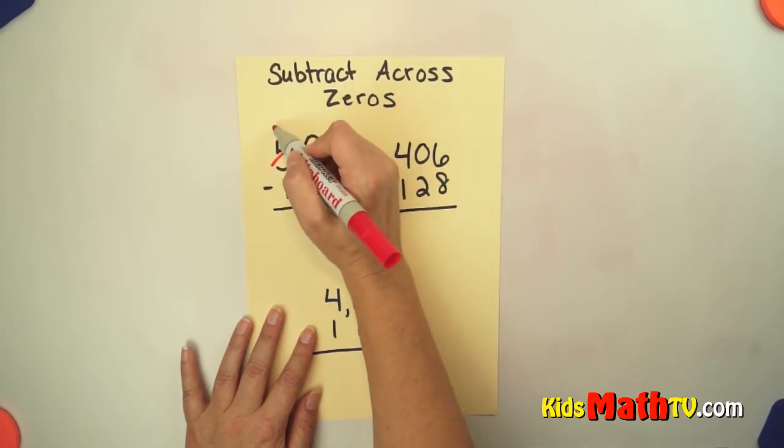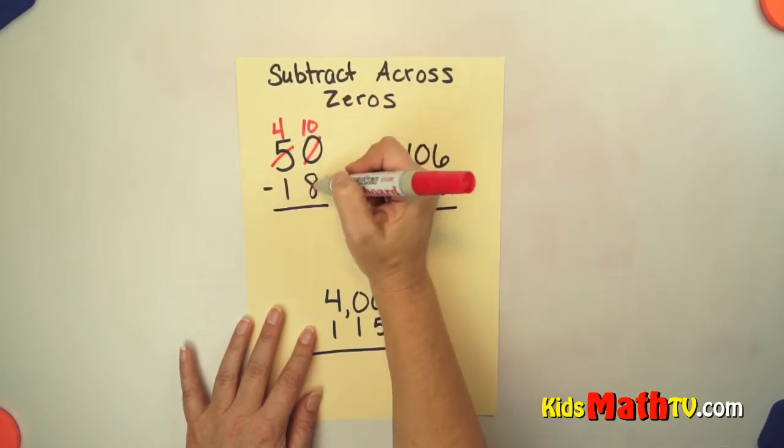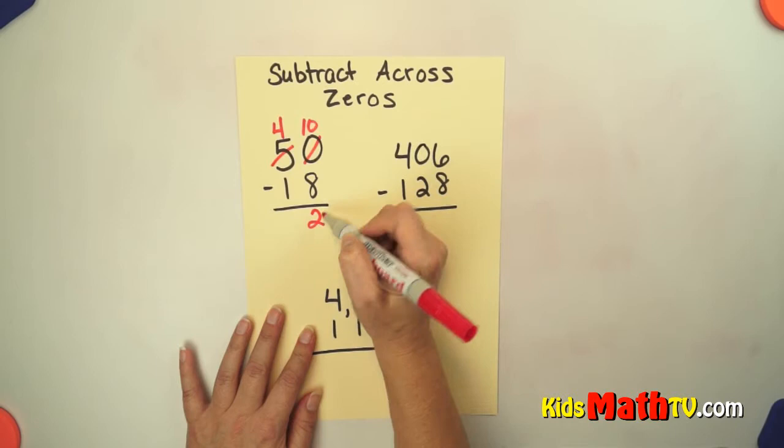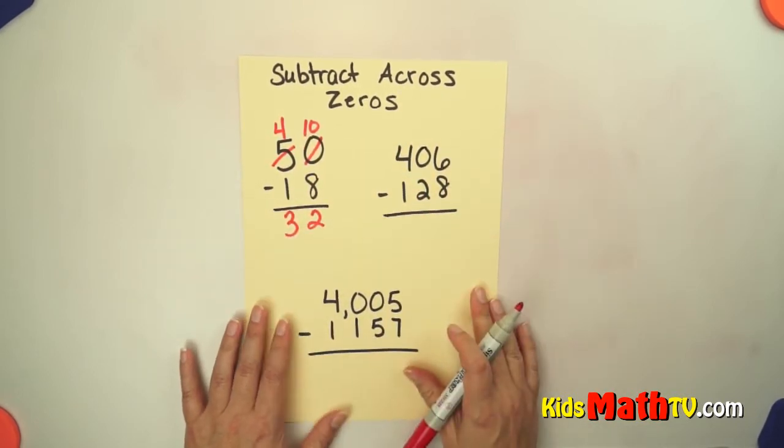We're going to borrow from the 5, it becomes 4, and now we have 10. So 10 minus 8 is 2, and 4 minus 1 is 3. That one wasn't too bad.